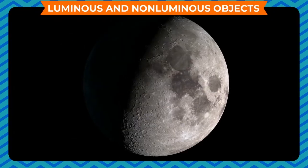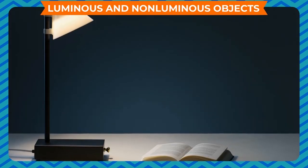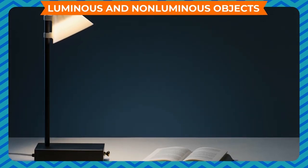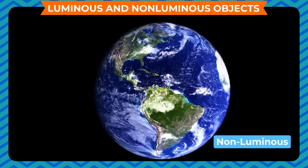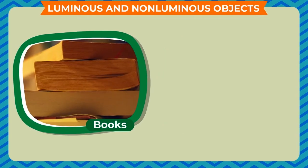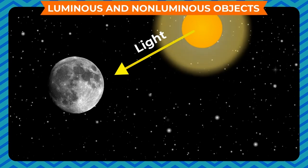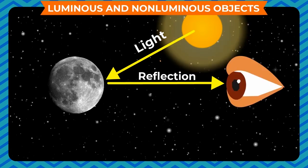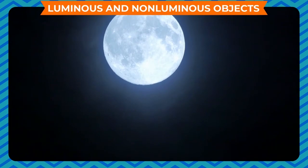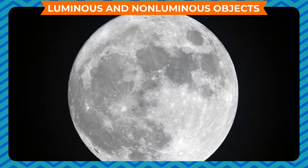On the other hand, objects which do not emit light but are visible only when they reflect the light incident on them by luminous bodies are called non-luminous bodies. Examples are the moon, the earth, books, blackboard, etc. When light rays fall on an object, the object reflects the light. When these reflected light rays fall on our eyes, we see the object. The moon looks shiny in the sky but is a non-luminous body — it does not emit its own light; the sunlight falls on it and makes it shiny.